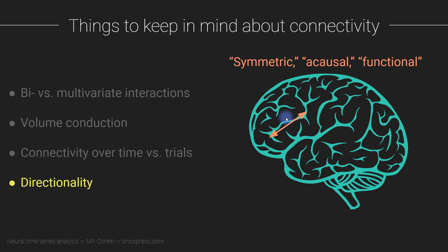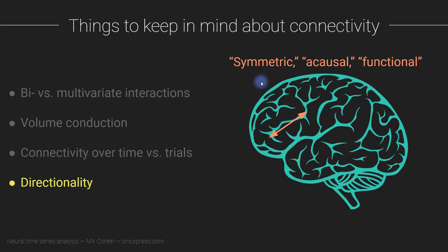A correlation coefficient is an example of a symmetric measure of synchronization: correlating variable A with variable B has no inherent directionality — the correlation between A and B equals the correlation between B and A. In this section I'm mostly going to discuss symmetric measures of connectivity, where it is not possible to infer causality or directionality. I will also introduce some causal measures like Granger causality, which allows you to measure directionality and separate the causal flow from A to B versus B back to A. By and large, most people in the literature use non-directional or acausal measures — symmetric measures tend to be more statistically robust and easier to work with.